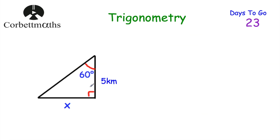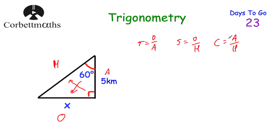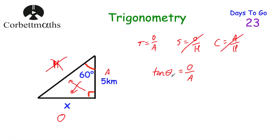Sometimes in trigonometry, rather than finding an angle, we need to find the length of a side. Here we have a right-angled triangle with a height of 5 kilometres, an angle of 60 degrees, and we want to find length X. Labelling the sides: the side opposite the angle is the opposite (X), the side opposite the right angle is the hypotenuse, and the remaining side — 5 km — is the adjacent. We're not using the hypotenuse, so we cross off sine and cos, leaving tan. So tan(60°) equals X divided by 5.